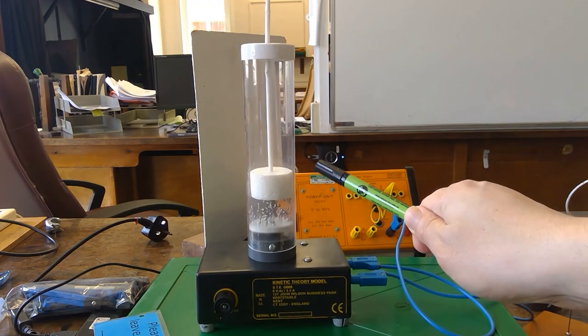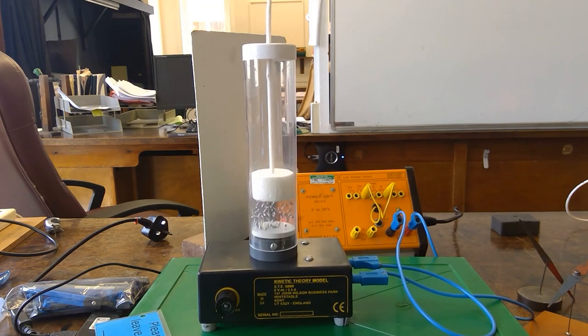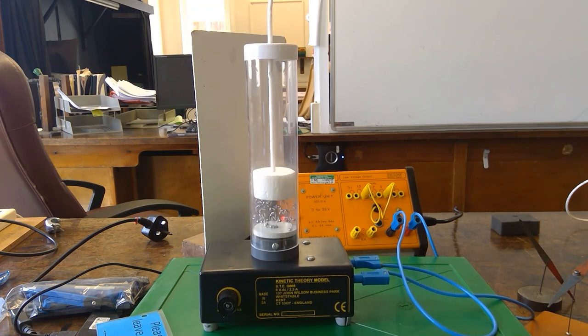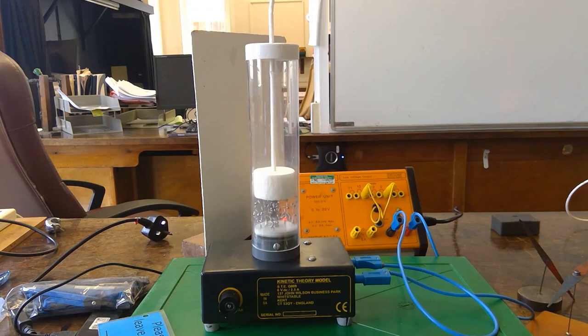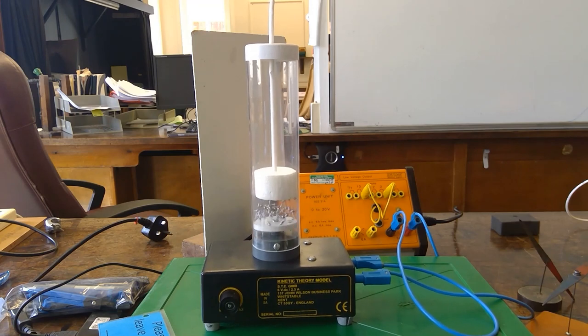You can see that it's jiggling around a little bit. Because, of course, the force from the ball bearings is not constant. Because the collisions are discrete. The force varies from moment to moment. And therefore, the piston jiggles up and down. A sort of Brownian motion analog.